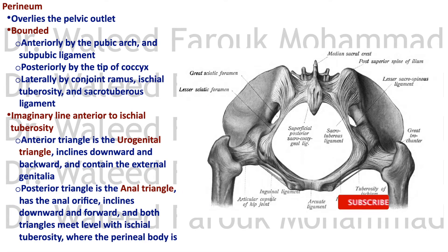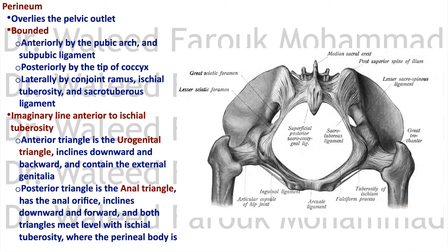The perineum is the area that overlies the pelvic outlet, containing the anal orifice posteriorly and the external genitalia anteriorly. It's bounded anteriorly by the pubic arch and the subpubic ligament, on the sides by the conjoined ramus, the ischiopubic ramus, and the ischial tuberosities, going backwards with the sacrotuberous ligament until we reach the tip of the coccyx posteriorly. It's the area that overlies the pelvic outlet — these are the same boundaries of the pelvic outlet.